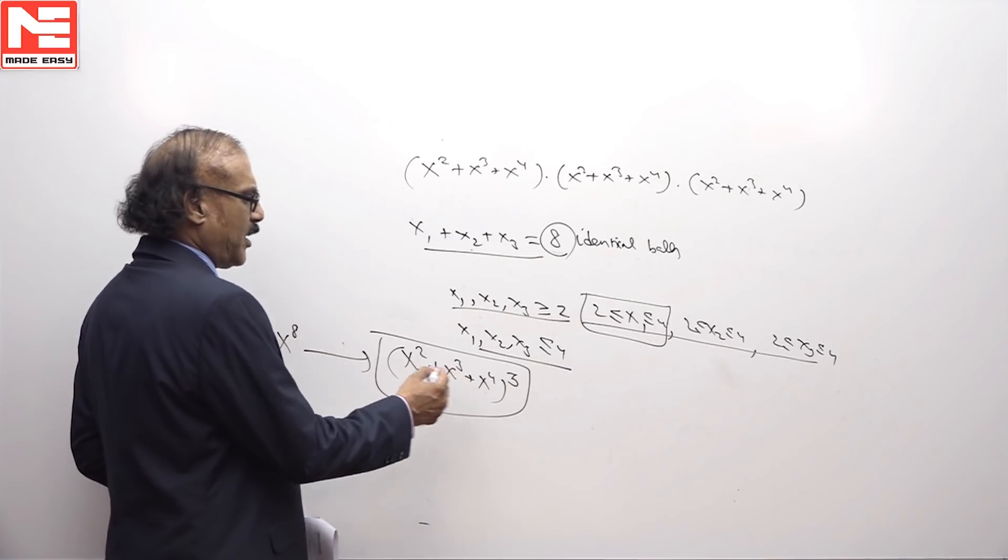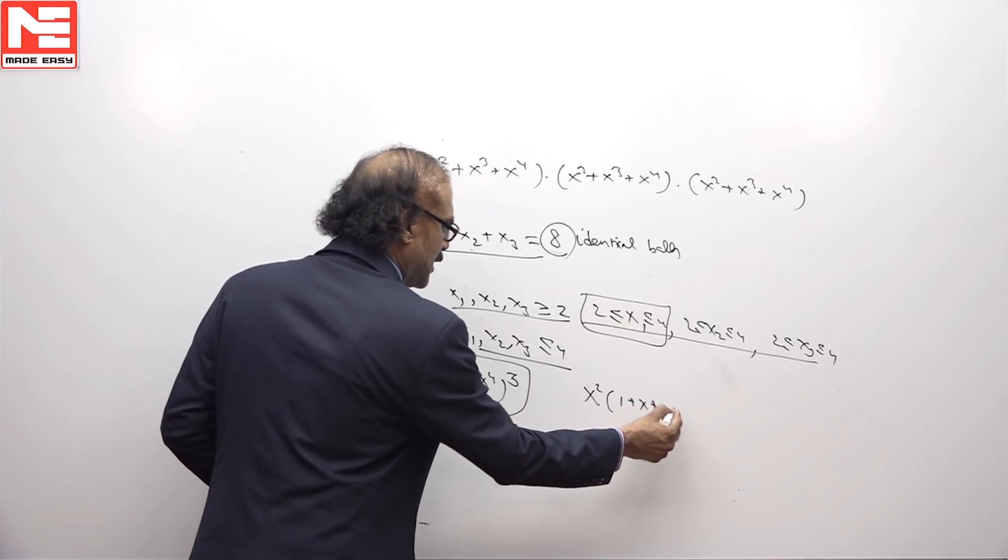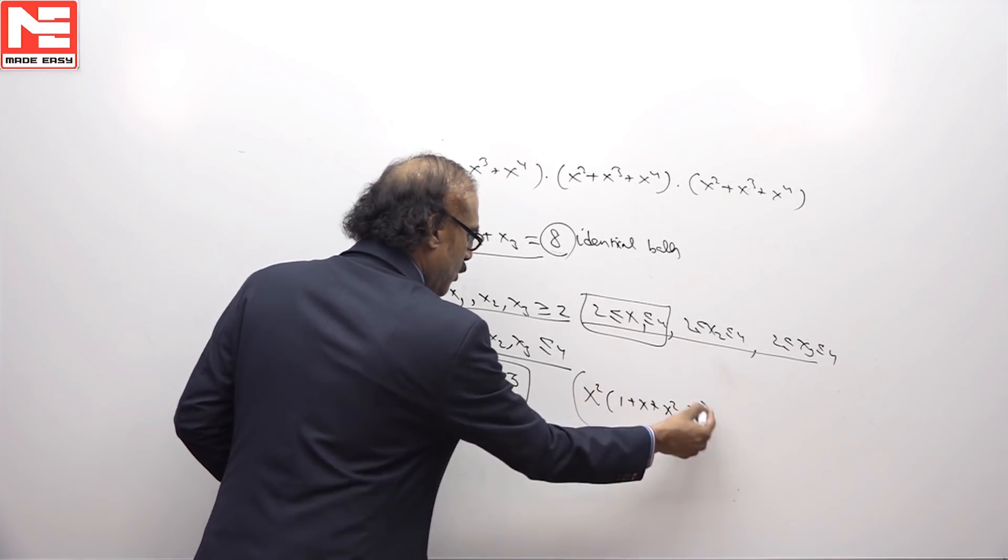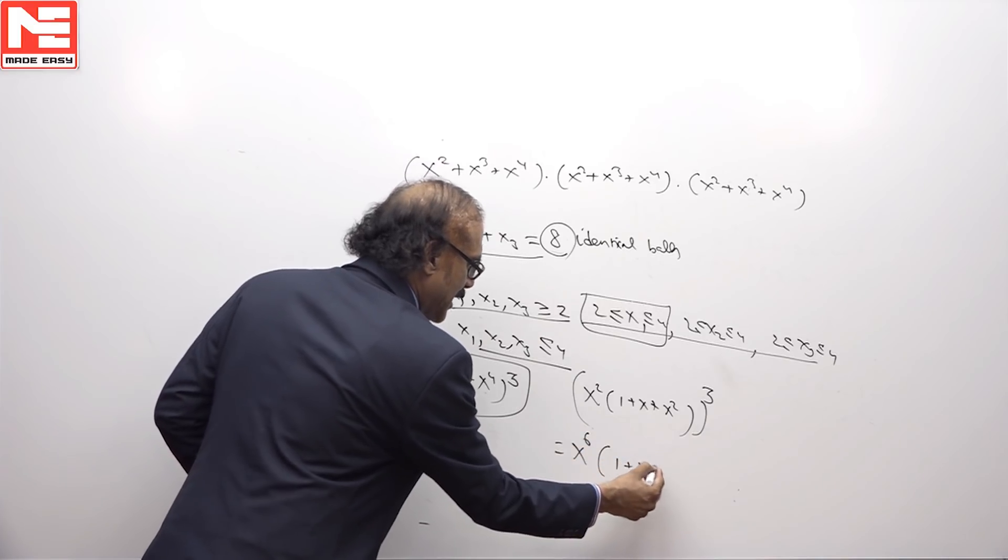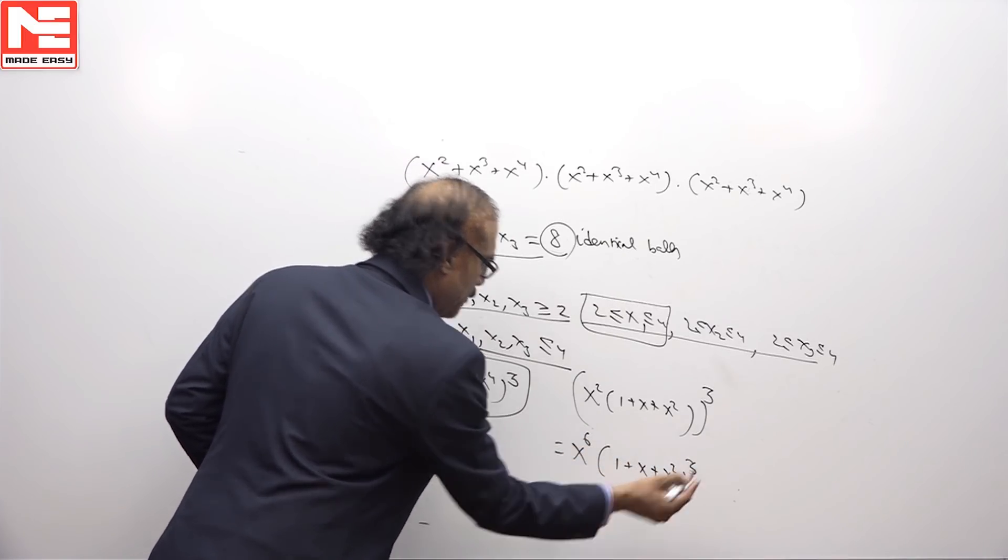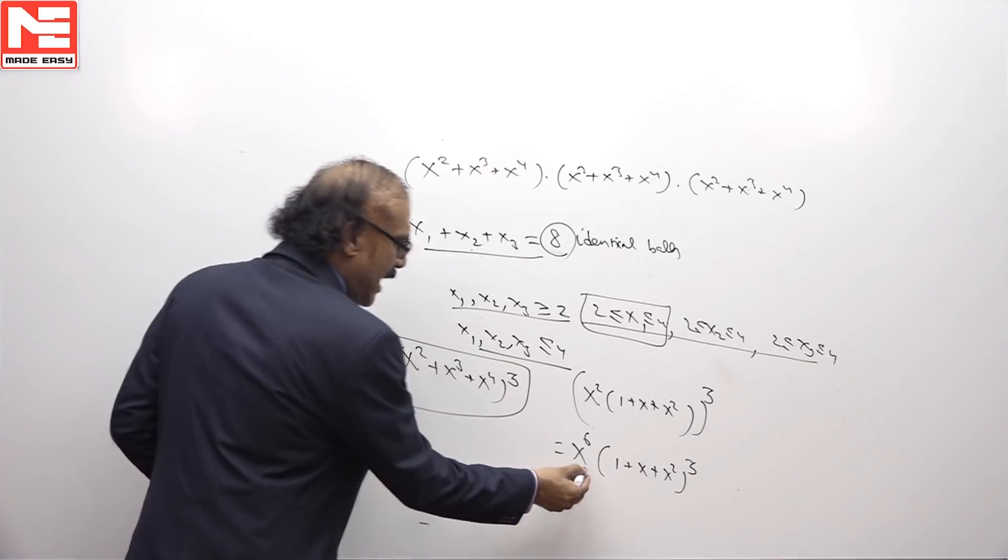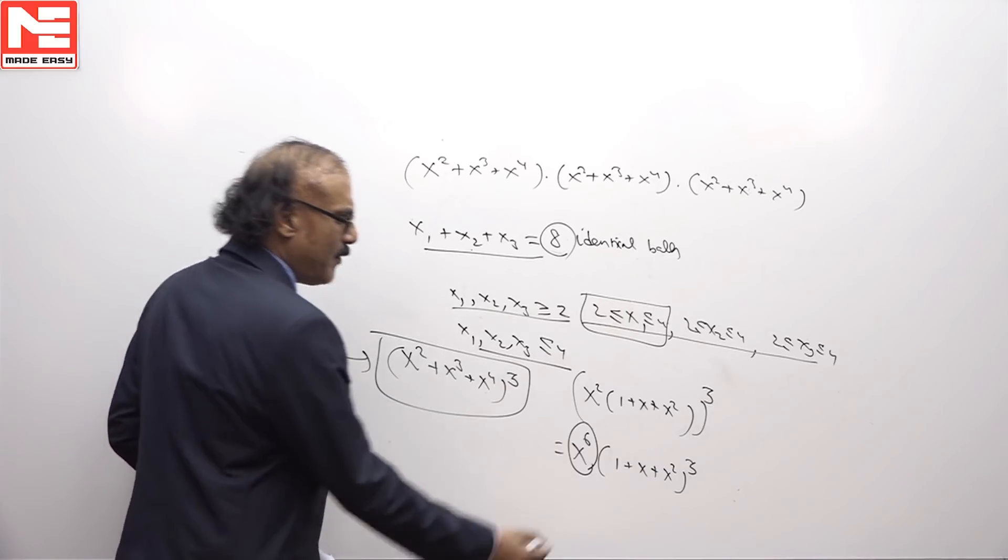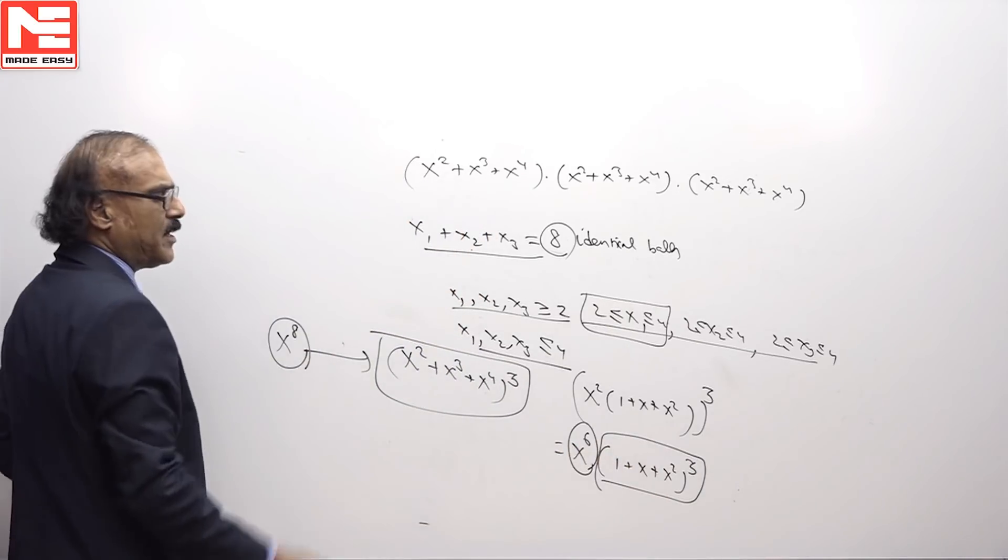Now let us find the coefficient, for that first we have to simplify this. Let us take x square outside and it becomes 1 plus x plus x square whole cube which will become x to the power of 6 into 1 plus x plus x square whole cube. The coefficient of x power 8 is what we want, but we already have x power 6 here, so we need to only find the coefficient of the remaining that is x power 2.